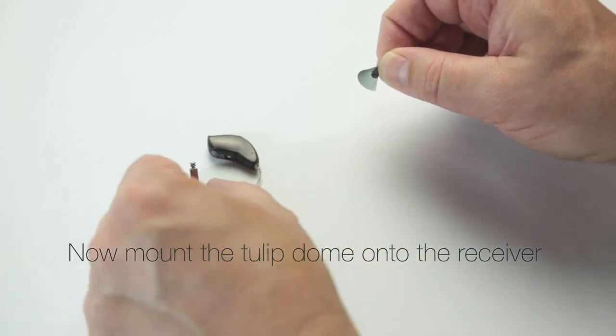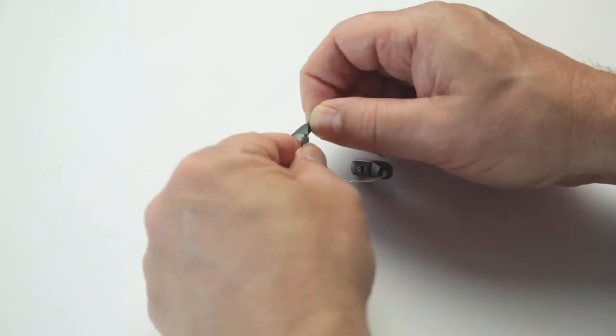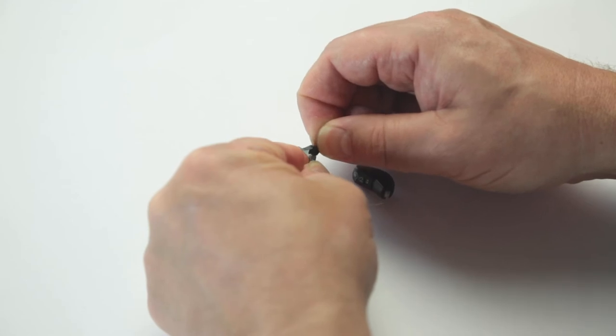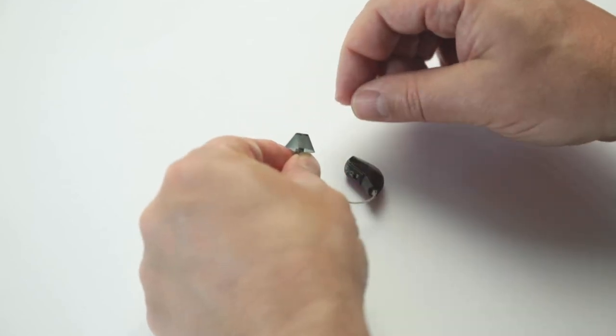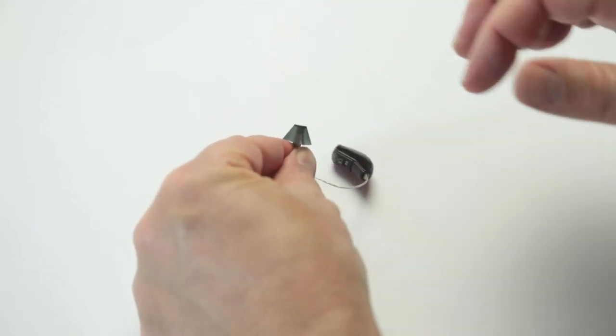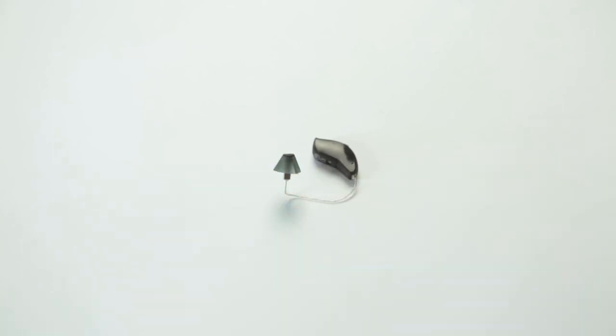Now mount the tulip dome onto the receiver. Once you've confirmed the tulip dome is firmly attached to the hearing aid receiver, gently fold back the petal into place.